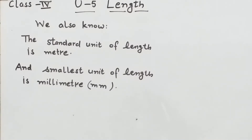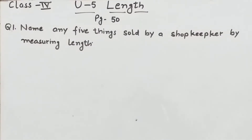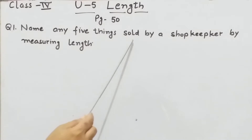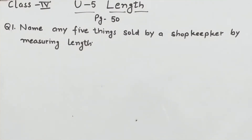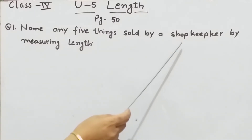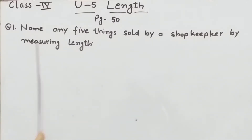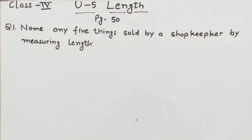We come to question number 1 of page number 3. Question 1 is: name any 5 things sold by a shopkeeper by measuring length. हमने ऐसी 5 things के name बताने हैं जो एक shopkeeper उनकी length को measure करके sale करता है। तो जल्दी से ऐसी 5 things के name आप guess कीजिए।